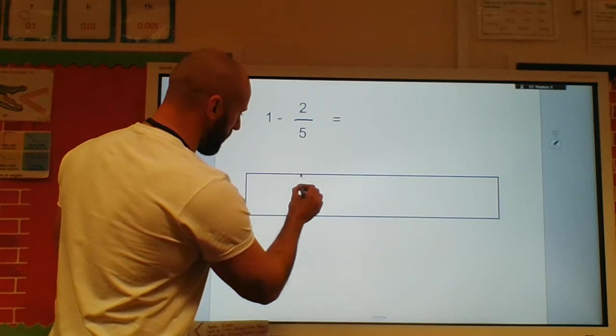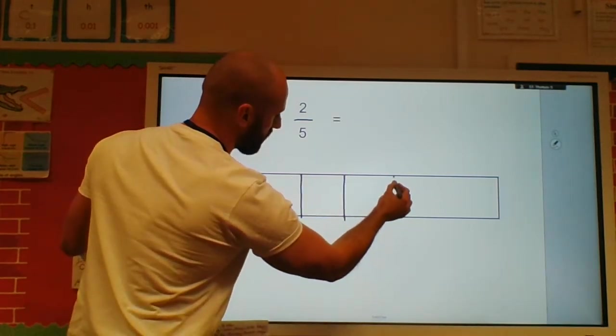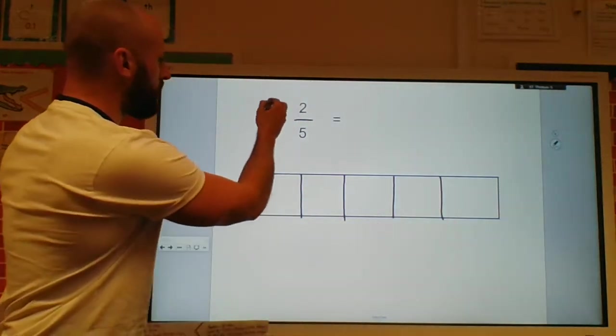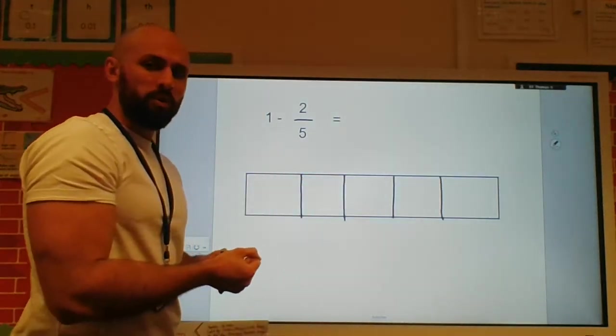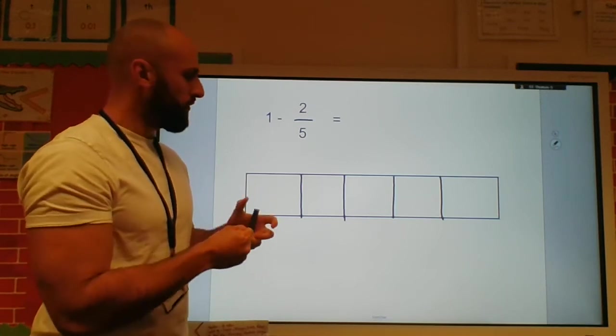I'm going to try my best to draw five equal parts. One, two, three, four and five. So I've got one whole there. So I've got my one whole cake here. I'm going to take away two slices of that cake. Two-fifths of that cake.